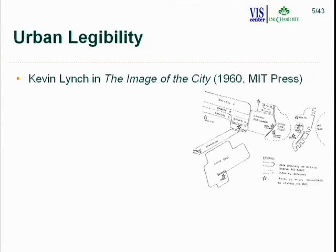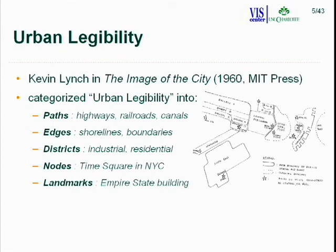For his book, Lynch went around the city of Boston and asked local residents to sketch out their immediate surroundings. He took this stack of sketched images and categorized important features into five groups: paths — which include highways, railroads, roads, and canals — and edges, such as shorelines and boundaries.